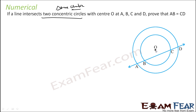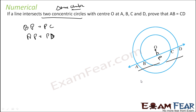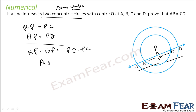If you draw a perpendicular at point P, I can say that BP is equal to PC because BC is a chord and OP is a perpendicular from the center. Similarly, for the bigger circle, chord is AD, so AP is equal to PD. When we subtract these two equations, AP minus BP equals PD minus PC, which gives AB equals CD. That is our proof.